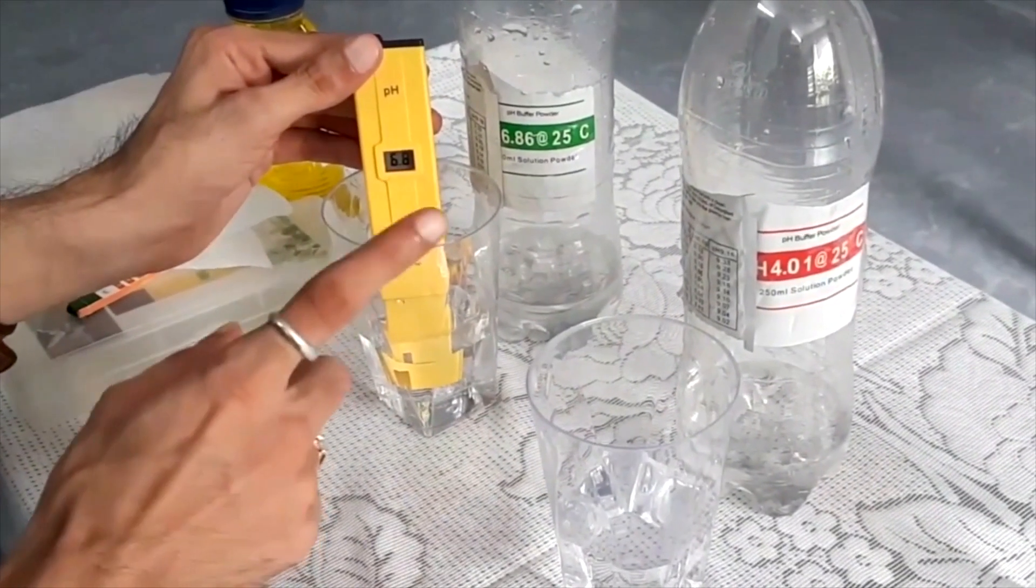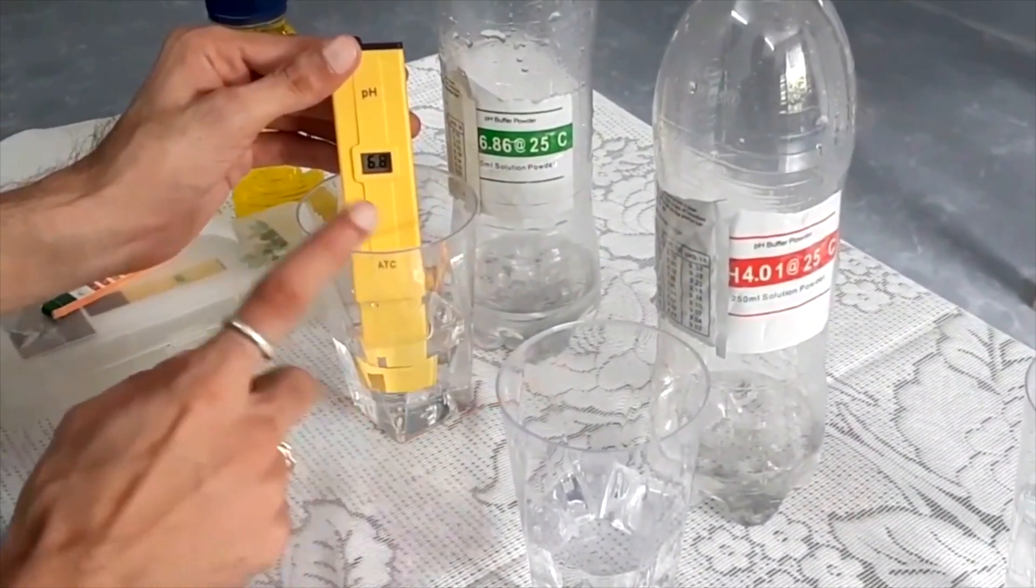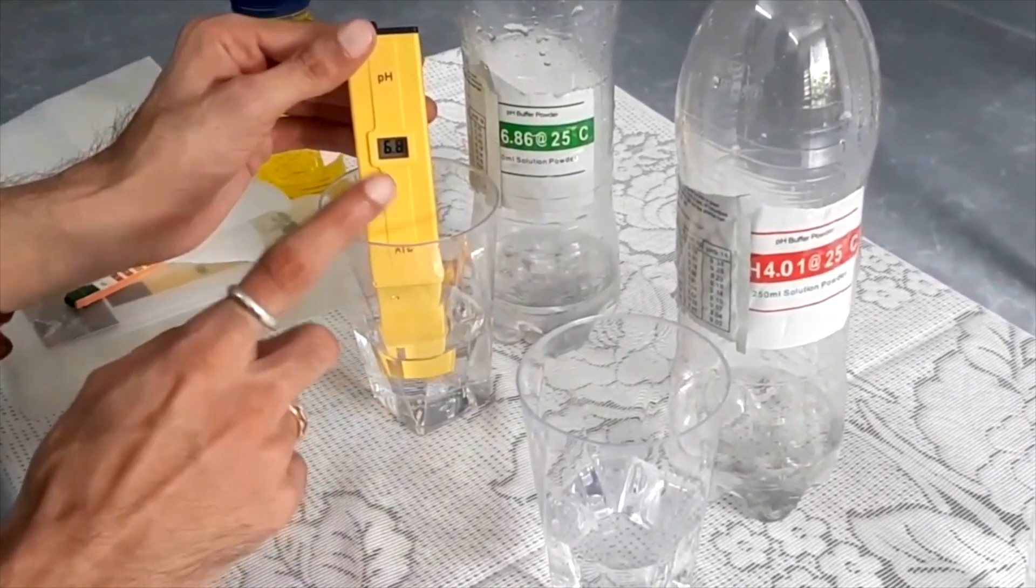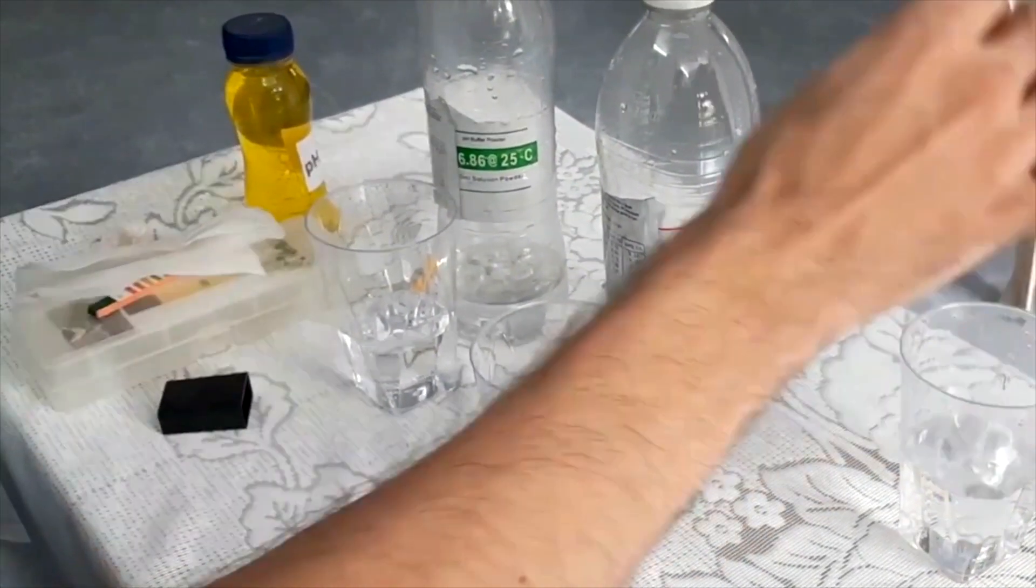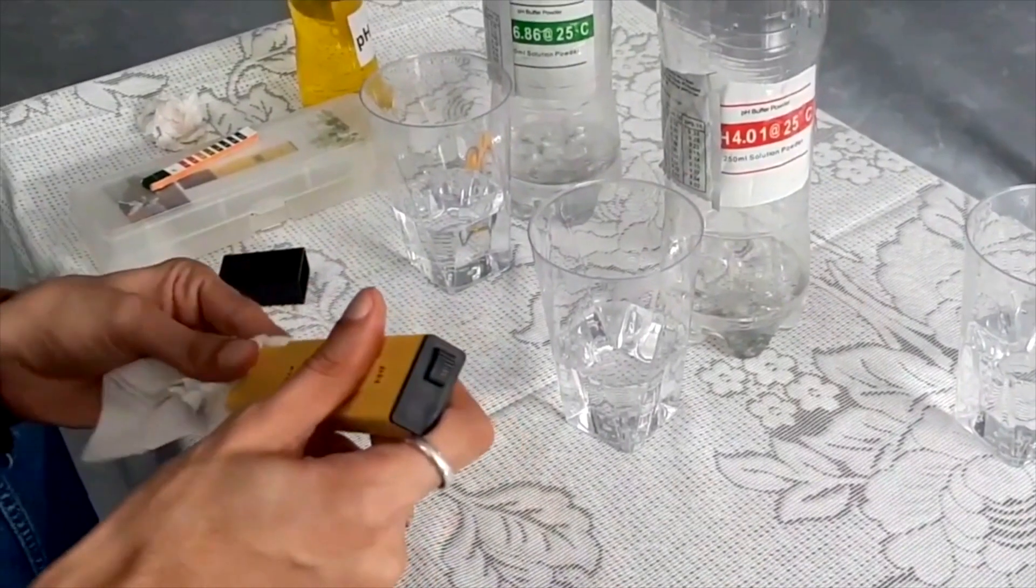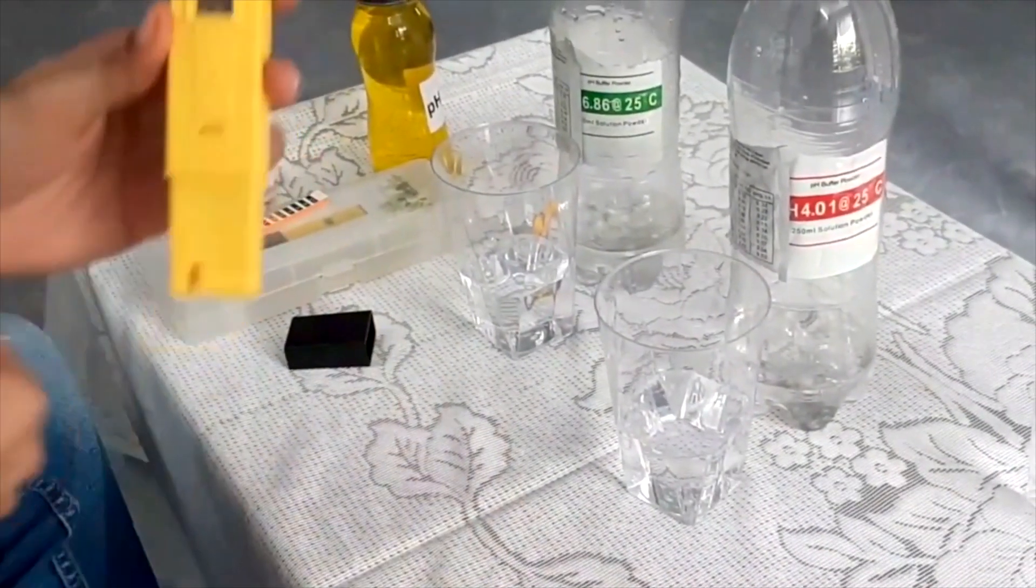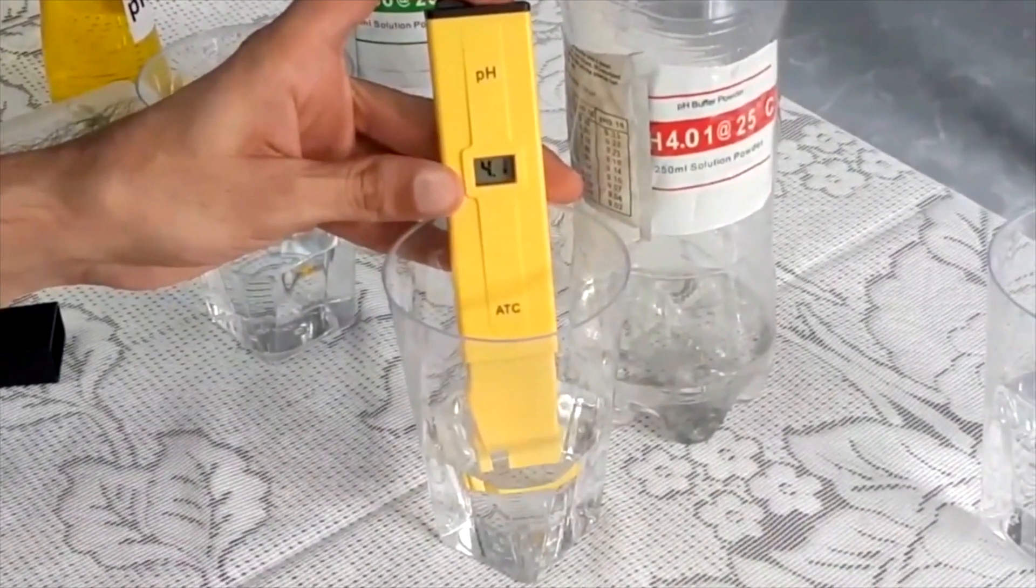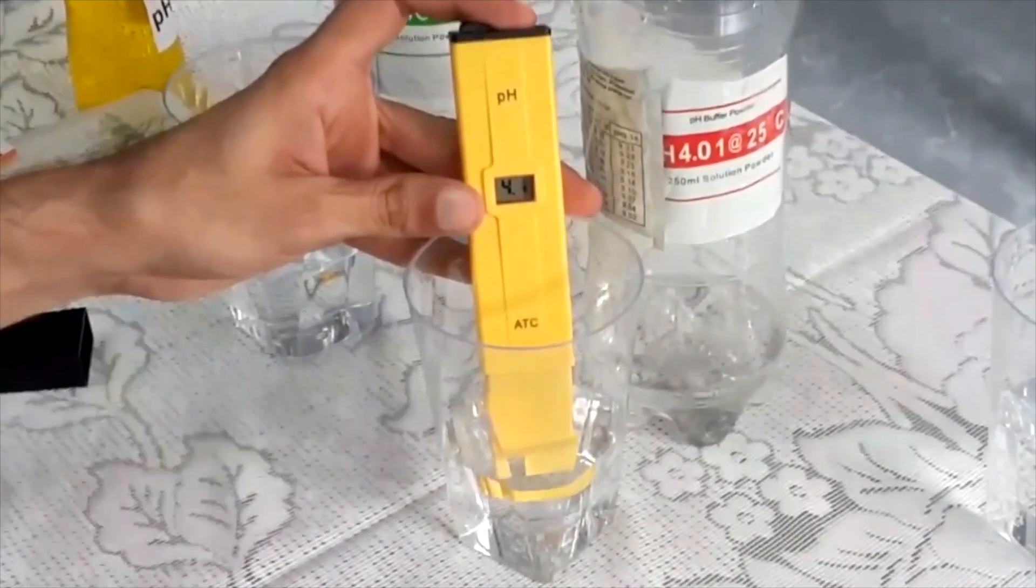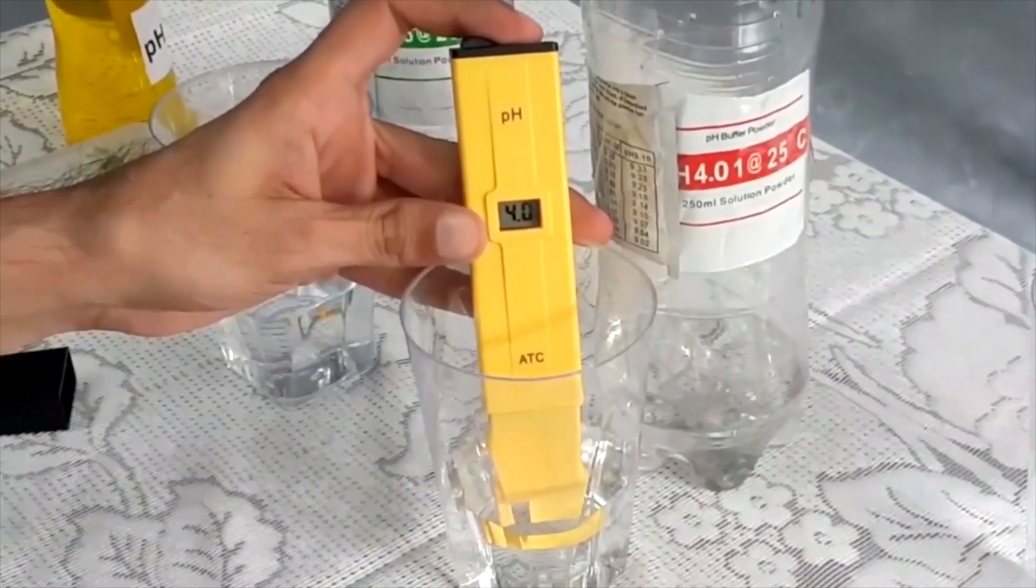Now we will recheck if the calibration is successful. Clean the pH meter with distilled water and dry with a tissue paper. Re-dip the meter and wait for a few seconds. The reading is accurate, 4.0.